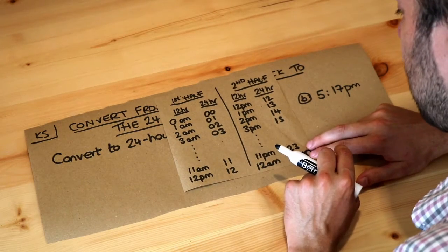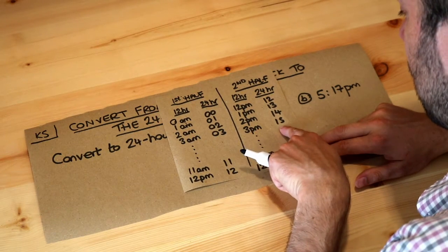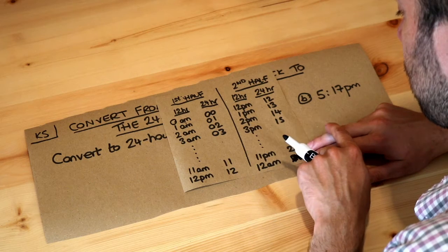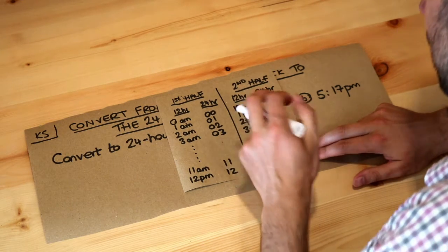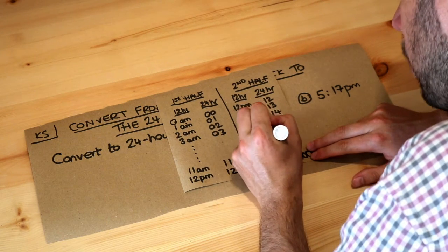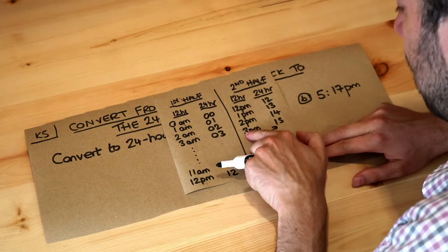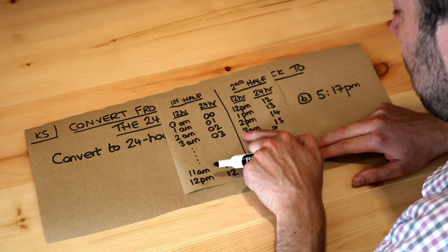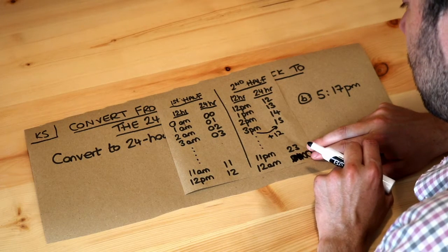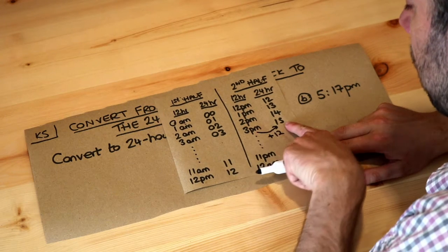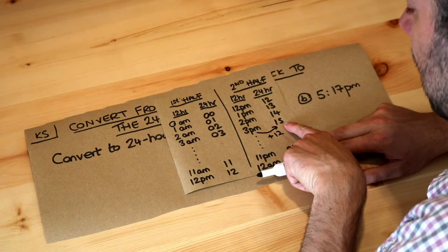If you're in the second half of the day, then to get from the 12-hour time to the 24-hour time, if it's 1 PM or later, you need to add 12. So you add 12 hours and the three becomes 15. 3 plus 12 is 15. So PM means you're going to add 12, and then the 24-hour time doesn't have the PM on the end.